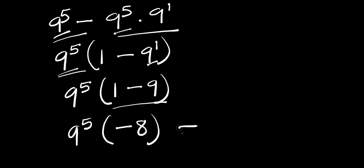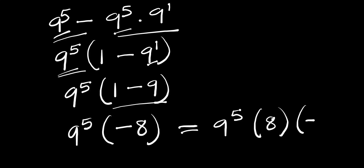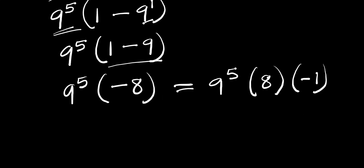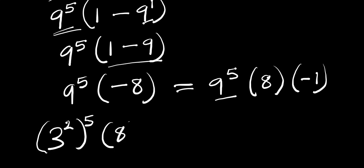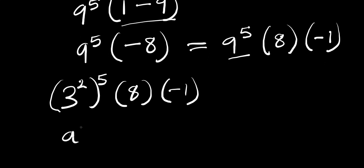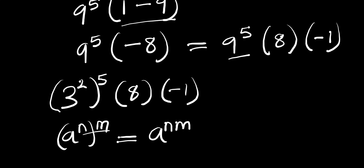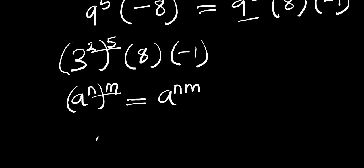So we can write this as 9 to the power of 5 times 8 times negative 1. Now, 9 is a perfect square, so we can write it as 3 to the power of 2, all to the power of 5. We make use of the identity: if you have a to the power of n, all to the power of m, this equals a to the power of n times m. Multiplying the exponents gives us 3 to the power of 10.